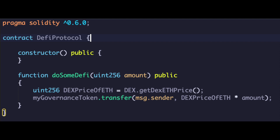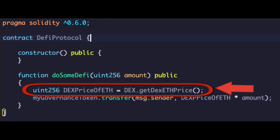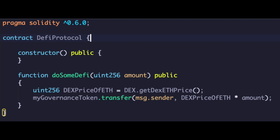Let's talk about price oracle manipulation first. Let's look at some really simple pseudocode here. We want to get the value of a token from a decentralized exchange, and we want to send somebody some governance token based off of the value of that currency. You see the issue? Somebody could take out a flash loan, crash or spike the price of that currency on that exchange, and totally ruin the smart contract — it's working with a price oracle that it doesn't control.